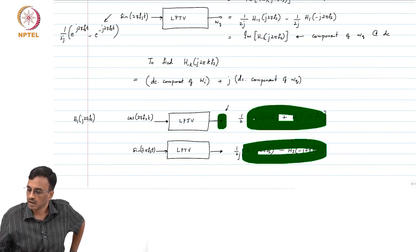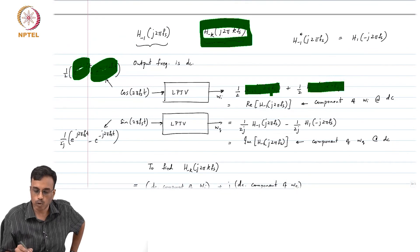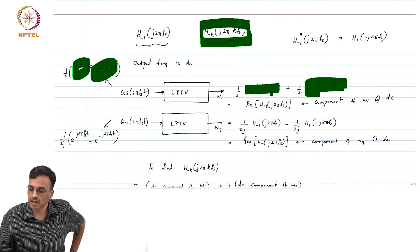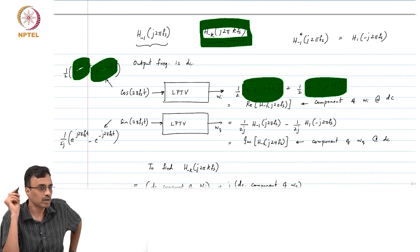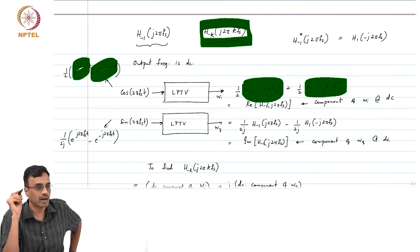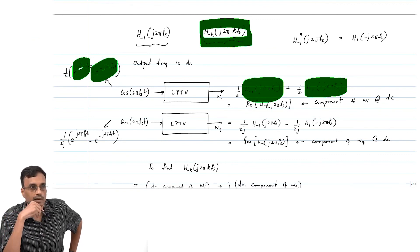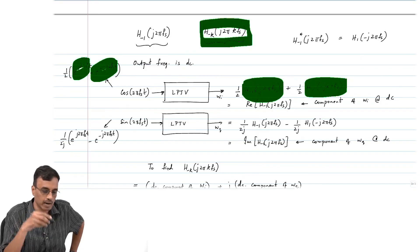It is only in the special case when the output frequency is DC that H_{+1}(−j2πfs) and H_{-1}(j2πfs) are related by mirror symmetry in the harmonic transfer functions. Therefore, you do not need to do any extra work — simply look at the average value of W_i and W_q, and you are done.